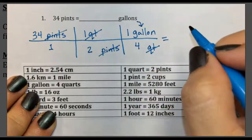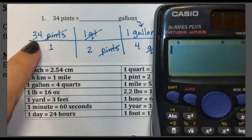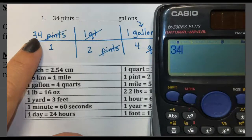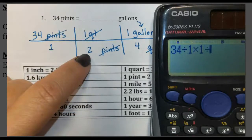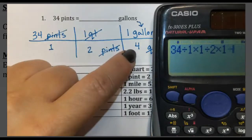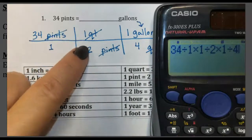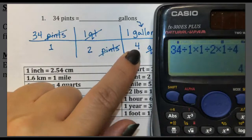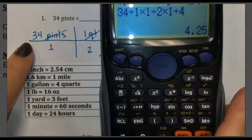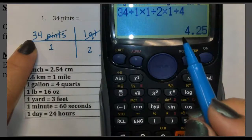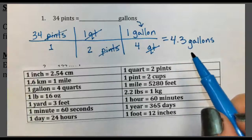Now we can use a calculator to find our answer. Type in 34, divide by 2, divide by 4, and that gives you a raw answer of 4.25. Because we started with only 2 sig figs, our answer can only have 2 sig figs, so it rounds to 4.3. So 4.3 gallons is my final answer.